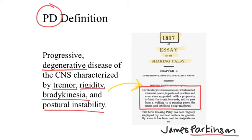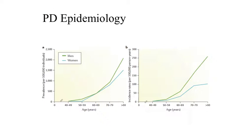Another interesting aspect noted by James Parkinson, who first described the disorder, is that the senses and intellects are uninjured. This is mostly true, as in most cases of Parkinson's disease, sensory function and cognitive ability are not altered. However, as the disease progresses, these may become more and more dysfunctional, as we will see momentarily.